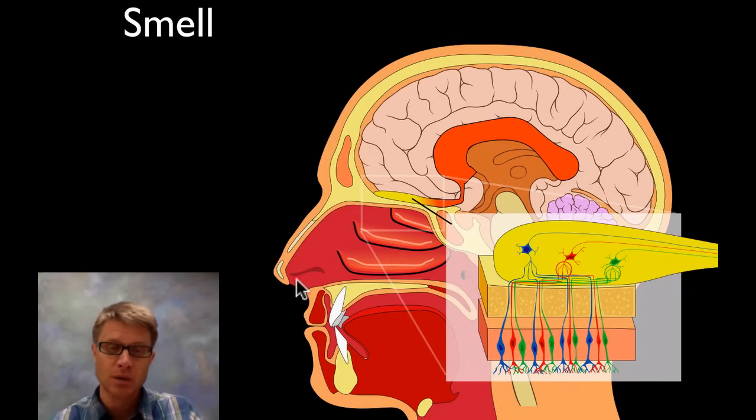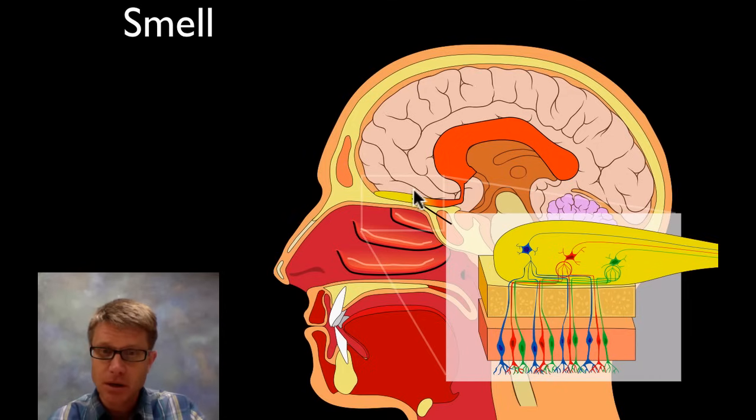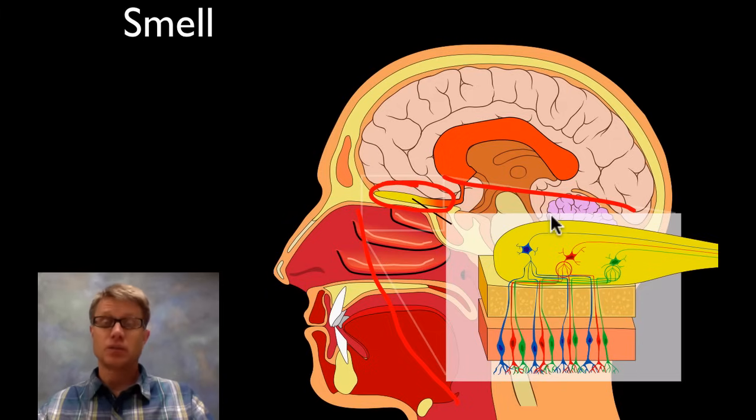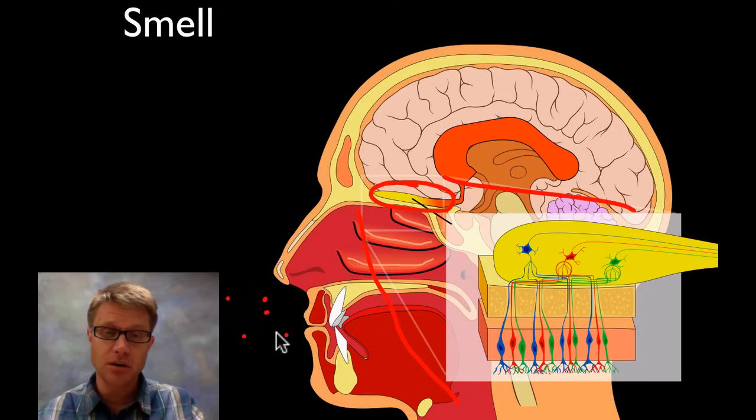Basically how does smell work? Well this is your nose right here. You have this olfactory bulb which is right up at the top. We've kind of zoomed into it here. If you want to smell something, how does that work? Well if you really want to smell a rose then you kind of sniff. Because you want to bring those chemicals up into your nose. Because this is a chemical sensor.